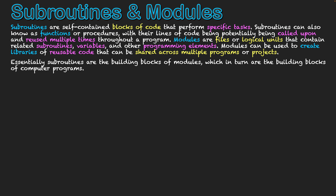Modules are files or logical units that contain related subroutines, variables and other programming elements. Modules can be used to create libraries of reusable code that can be shared across multiple programs or projects. Both subroutines and the content within modules can be reused — that's the common thing between these two elements. We are reusing code in a simpler and more efficient manner when calling upon it again.